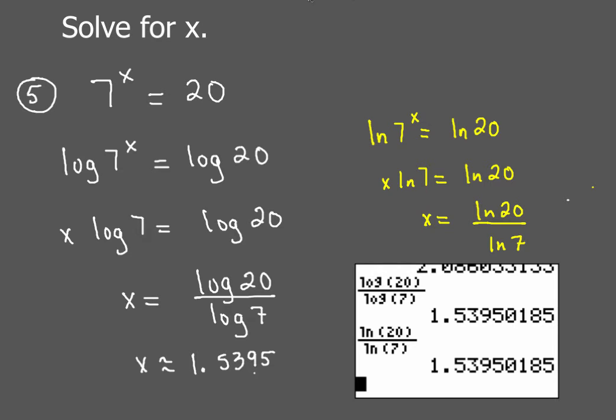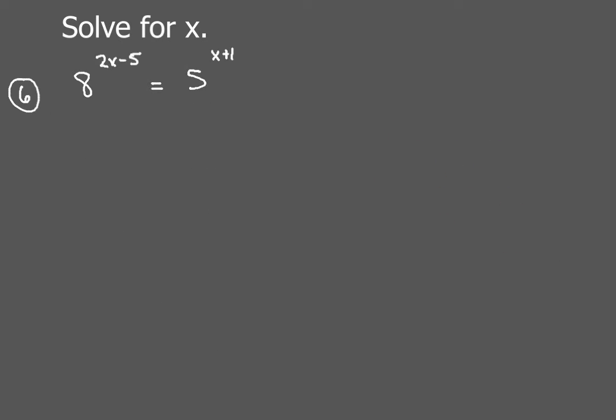Now that's for this basic type of problem, but now we're going to kick it up a notch. We're going to get a little bit more complex. All right, now check this one out. So we're going to have 8 to the 2x minus 5 equaling 5 to the x plus 1. So again, we're just going to start out. First step, take the log of both sides. We're going to have log of 8 to the 2x minus 5 equals log of 5 to the x plus 1. Using exponent properties, so this is where you have to be really careful.